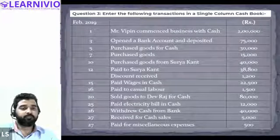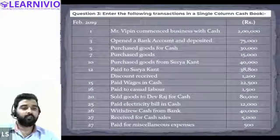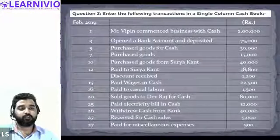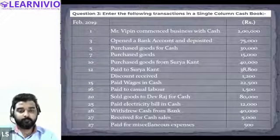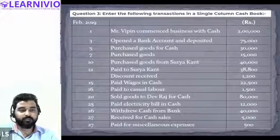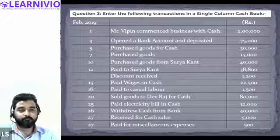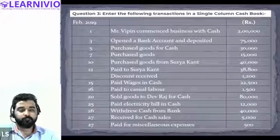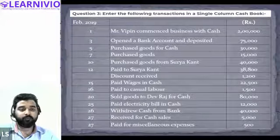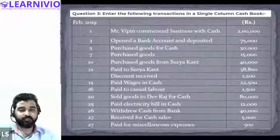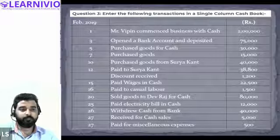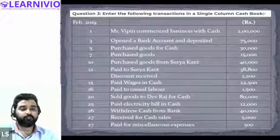Mr. Weapon commenced business with cash. Halima, on which side of the cash book will this be recorded, and by what name? It will be recorded on the debit side, by the name 'To Capital'. Next: open a bank account and deposit 75,000.